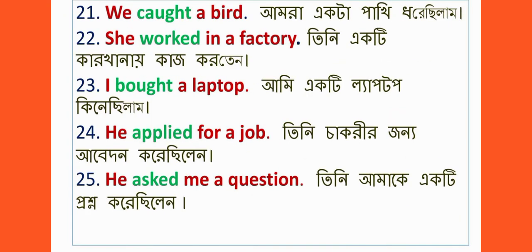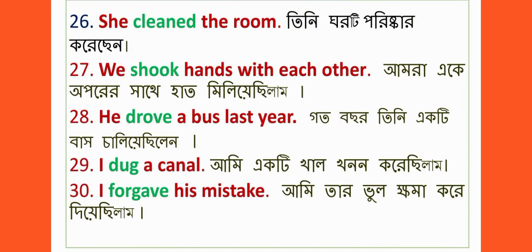Number twenty-one: We caught a bird. Number twenty-two: She worked in a factory. Number twenty-three: I bought a laptop. Number twenty-four: He applied for a job. Number twenty-five: He asked me a question. Number twenty-six: She cleaned the room.